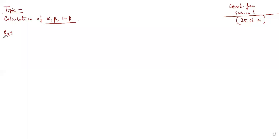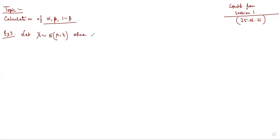The third question is the following: let capital X be a random variable following a normal distribution with mean mu and variance 4, where 4 is the variance.